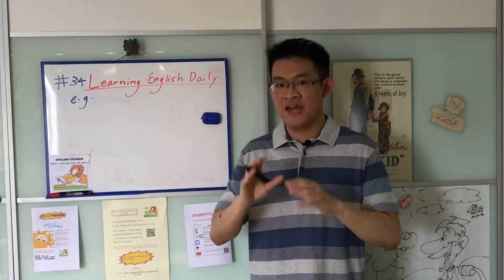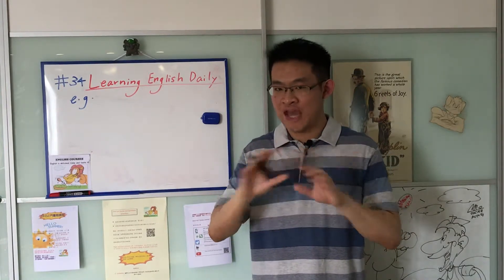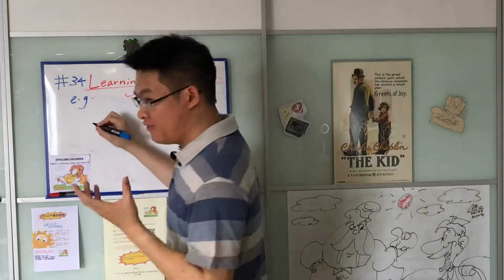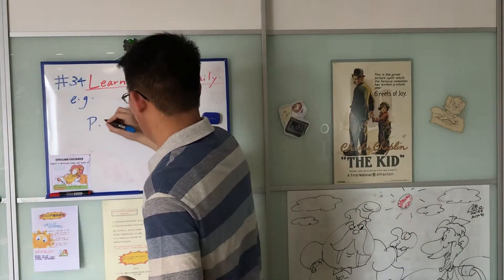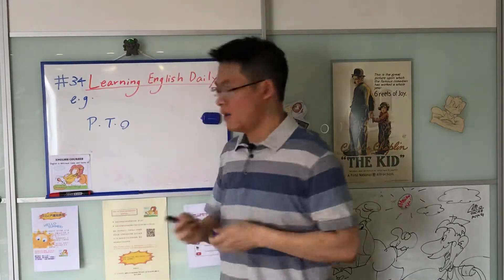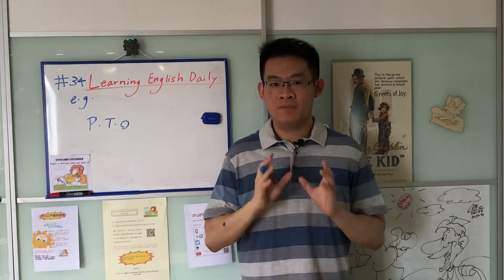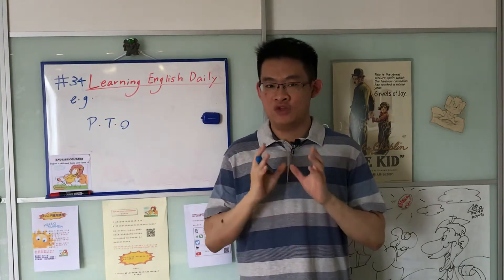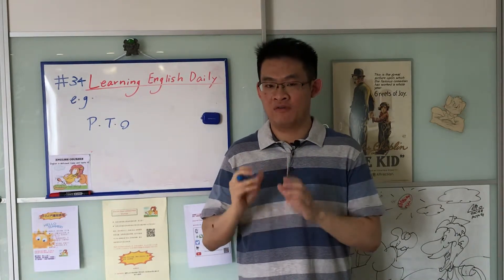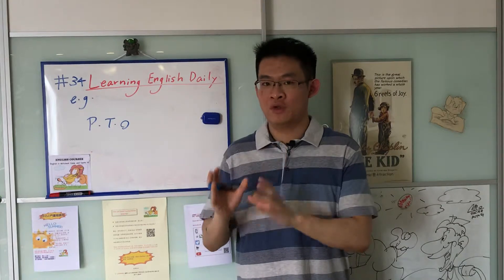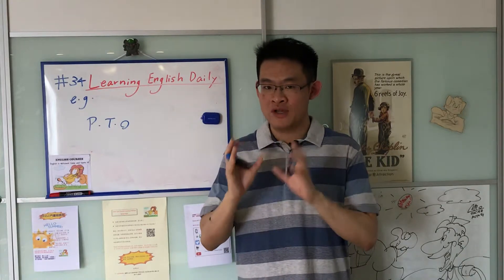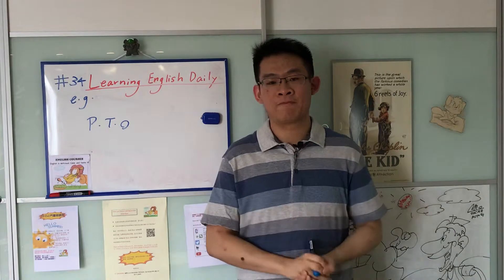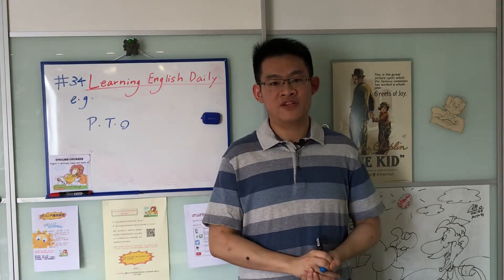In the old days when people wrote letters, they would have a lot of these abbreviations scattered within those letters. For example, there's an abbreviation that kids today might not know: PTO. PTO stands for 'please turn over' and is usually written at the bottom of the first page of a letter to advise the reader to turn the letter over and continue reading.